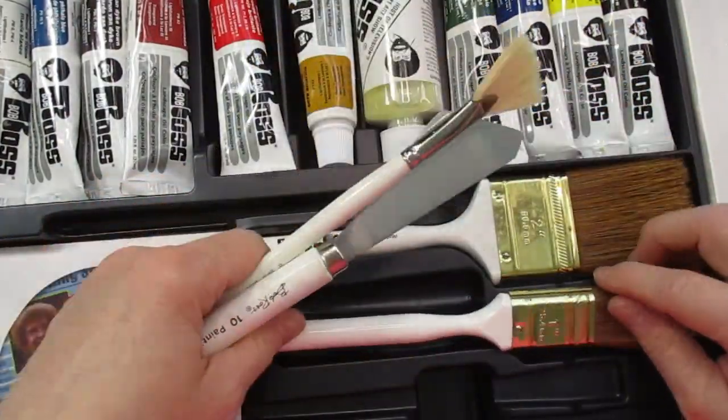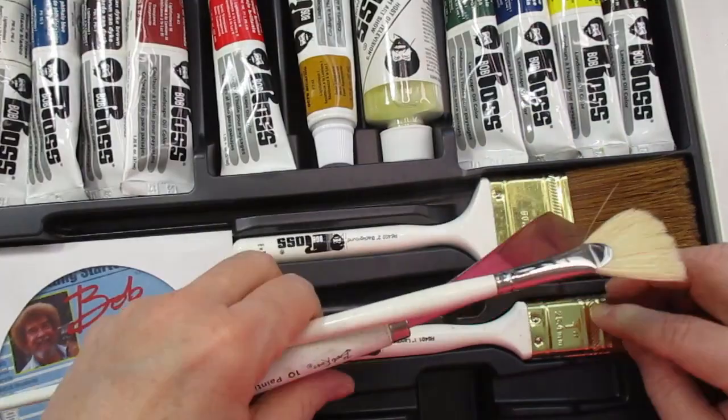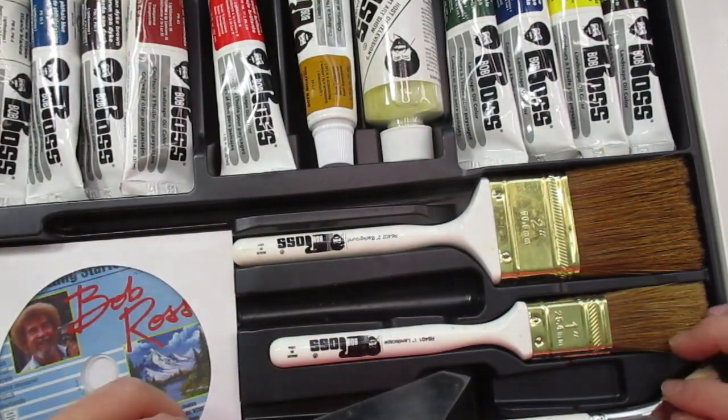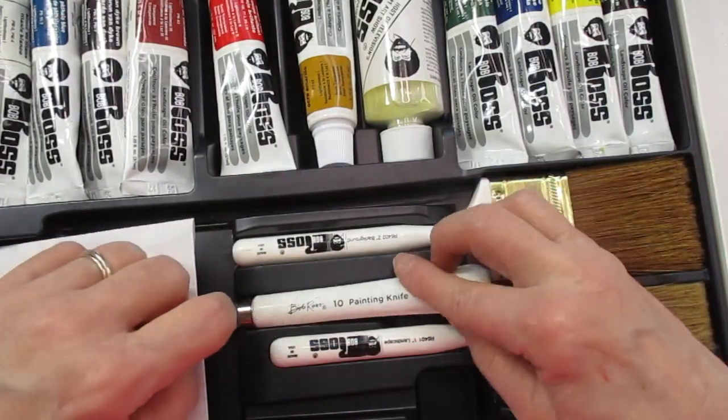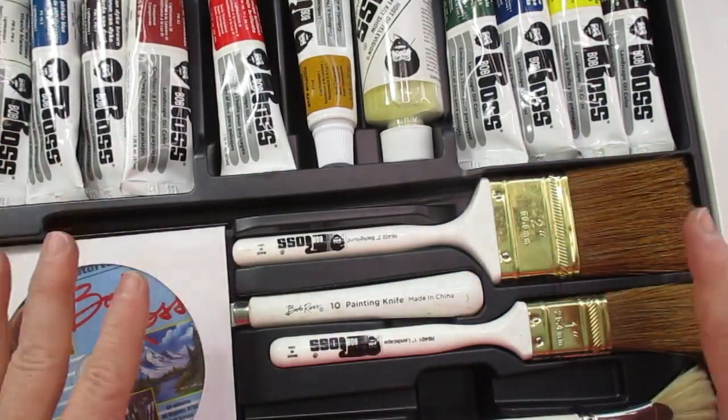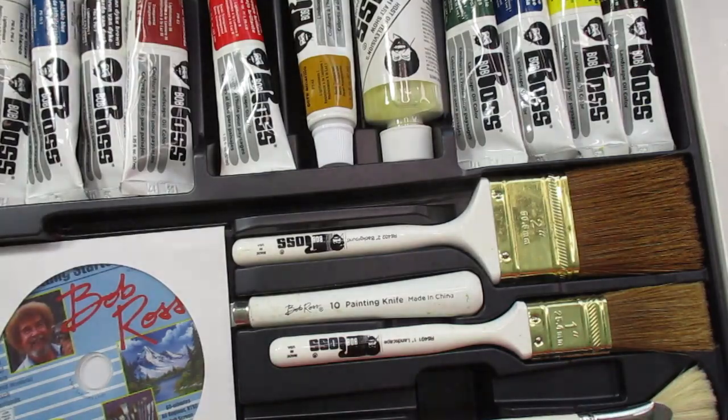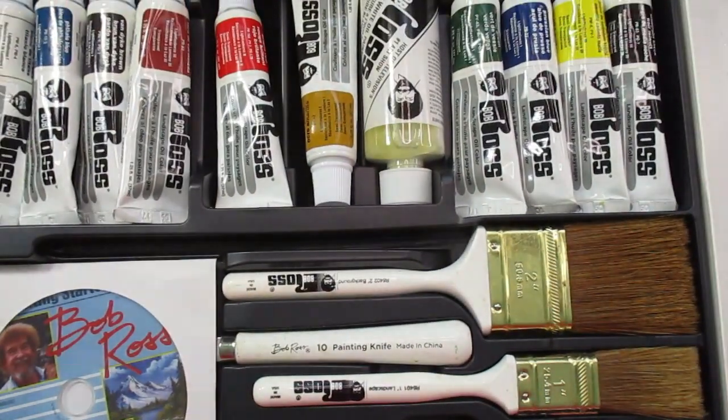Bob Ross was one of my very first people I started watching painting, who really got me interested in painting. Him and Bill Alexander, because Bill Alexander is the one who taught Bob how to paint, and Bob kind of branched off on his own and got his own style in the wet-on-wet.